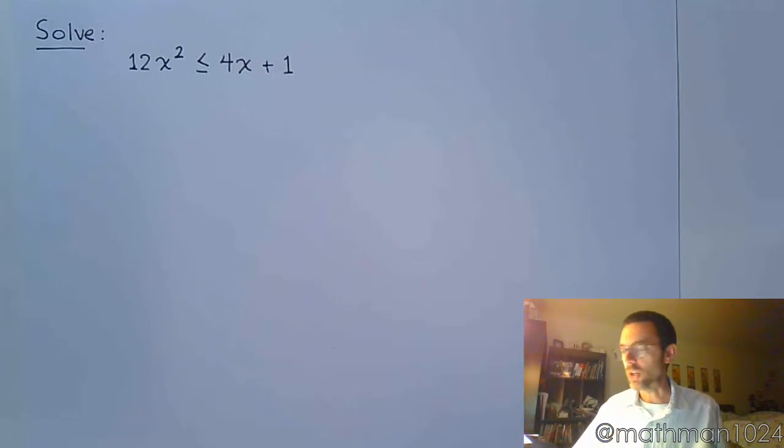Let's take another look at a quadratic inequality. Before I can go about finding those critical values, I really need to move my terms so they're all on the same side and so that I have zero on the other side.